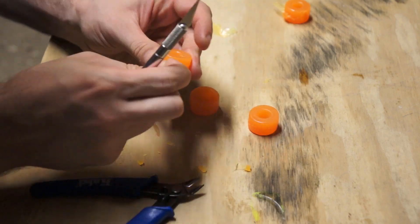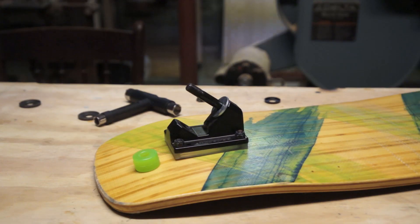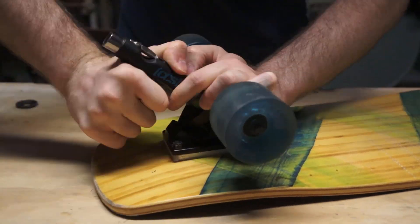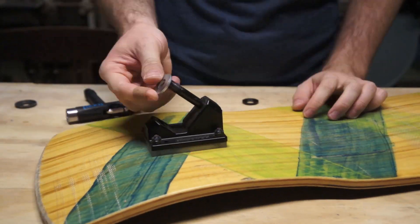So I let them finish curing for 24 hours and then I put them on a board. I'm putting them on the same cruiser that I used to test the first batch of bushings I cast. This way I'll be able to compare and contrast how the new ones ride with the new pressure casting method.